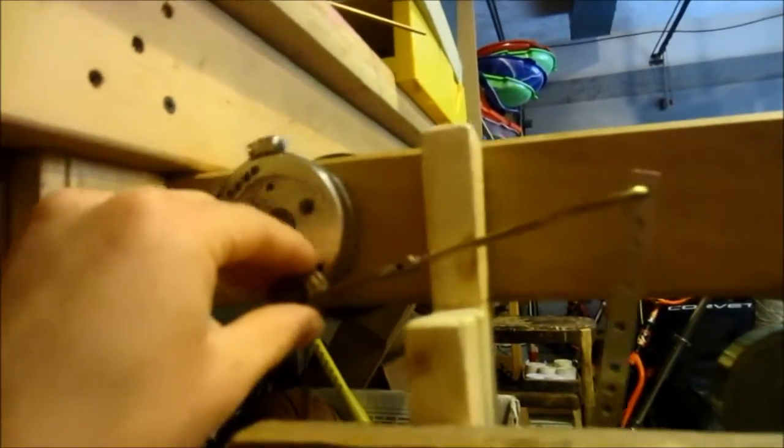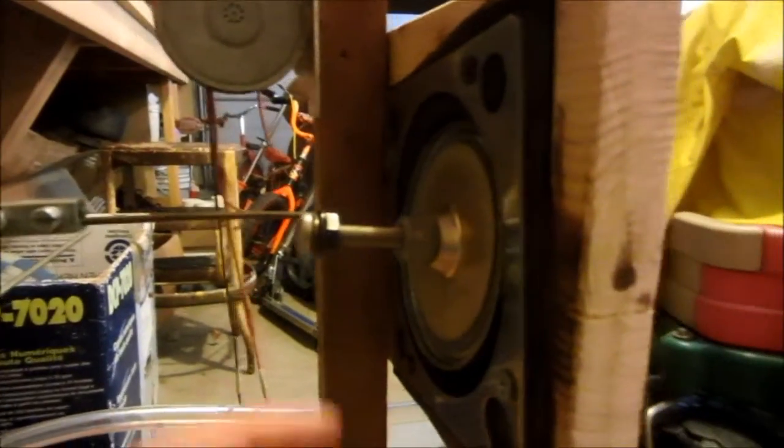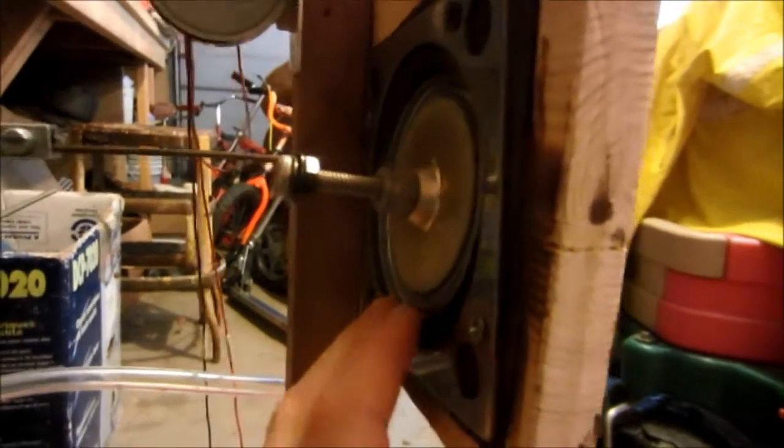And then I made this little linkage here. It's just a piece of metal with some holes in it to take away some of the stroke, because there's too much stroke with this. It wouldn't work so well with that much stroke. You'd have to have a pretty odd shaped diaphragm that wouldn't really work too well.